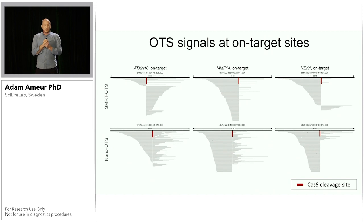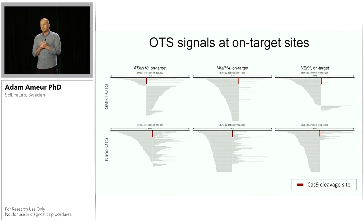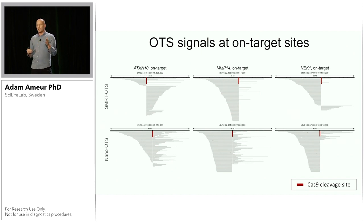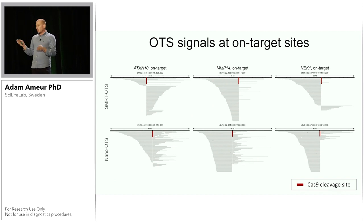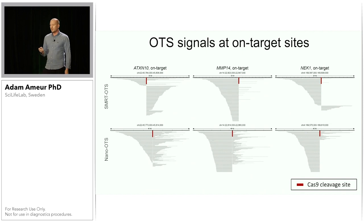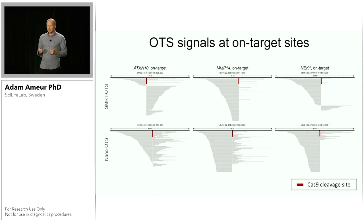This slide shows how it looks at the on-target sites for the three guide RNAs. At the top we have the Smart OTS reads and at the bottom the nanopore sequencing reads. The red line corresponds to the Cas9 cleavage site, and you can see these very specific patterns, which means we can identify these peaks very easily.